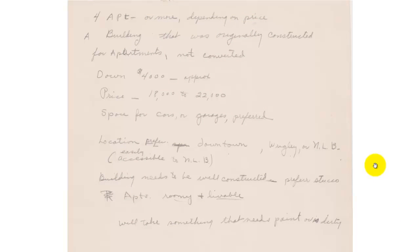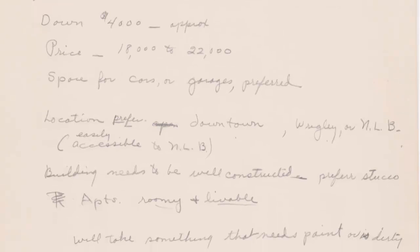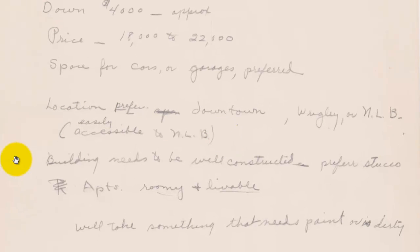This is all handwritten. His criteria is he wants a four unit apartment or more depending on price, a building that was originally constructed for apartments, not converted. He wants his down payment to be about $4,000 approximately with the price between $18,000 and $22,000 — that's 20% down on an average $20,000 fourplex. He wants space for cars or garages preferred. Location: prefer downtown Wrigley or North Long Beach, Southern California. Building needs to be well constructed, prefer stucco. Apartments roomy and livable. Will take something that needs paint or is dirty.